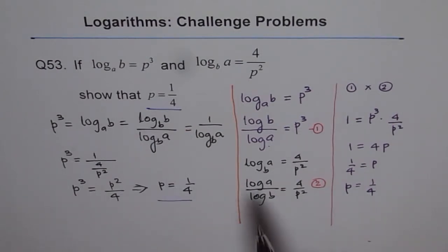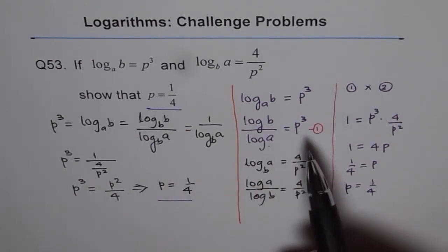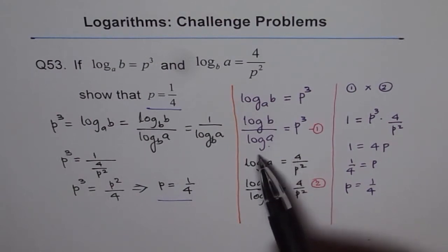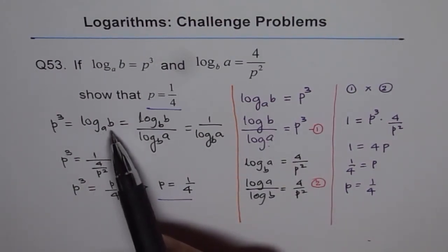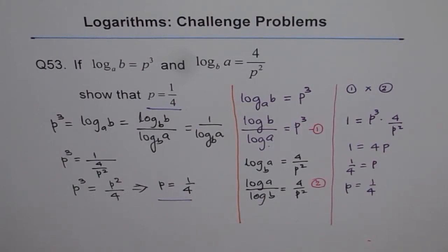So what we did here was we did change of base in both cases. In this example, we changed the base to 10 and here we changed the base to the argument. And got a reciprocal kind of function. So that is how you can solve these kinds of questions. They're tricky, interesting and challenging at times. I hope you learned and move on. Thank you.